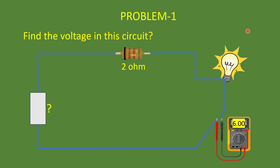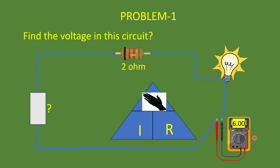Let's look at a problem. Find the voltage in this circuit. There is an unknown voltage source connected to a 2-ohm resistor with a lamp attached. The multimeter reading is 6 amps. We have resistance and current. Using the Ohm's triangle and hiding V, the formula is V equals I times R. Substituting: voltage equals 6 times 2, which is 12 volts.